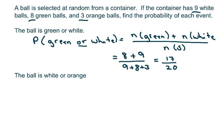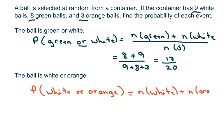And we're going to do the same thing with white or orange. So we have the probability of white or orange, so that's going to equal the number of white plus the number in orange over the number in the sample, which we already know is 20.